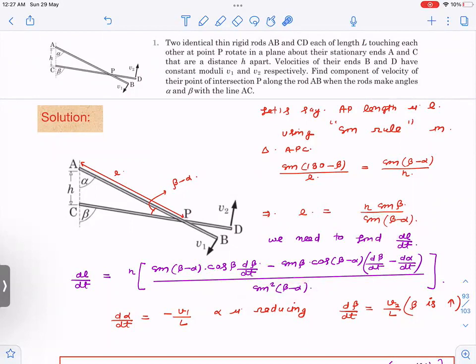Now see the point is that when this CD rod is rotating, beta is increasing, so d(beta) by dt is equal to omega, angular velocity of this rod, which is v2 by capital L, length of the rod. Beta is increasing so I've written this as positive. When this rod is moving in this direction you can see that this angle is going to reduce.